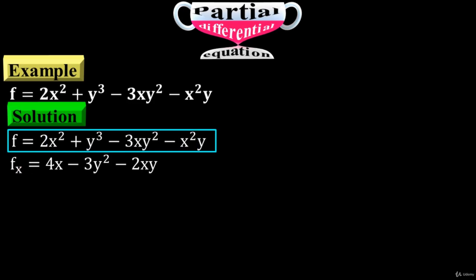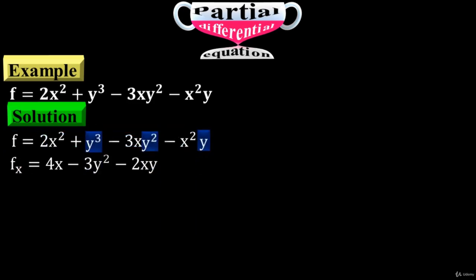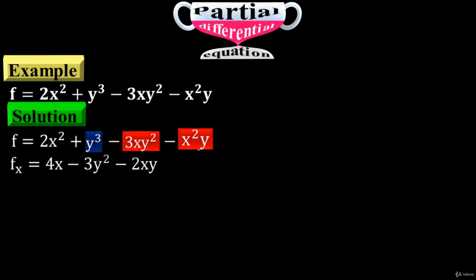Now take the same function and differentiate it with respect to y. These three terms have y variables, so just differentiate them with respect to y to have f sub y equals 3y squared minus 6xy minus x squared.